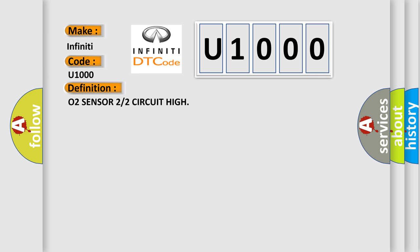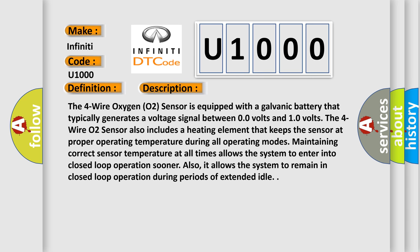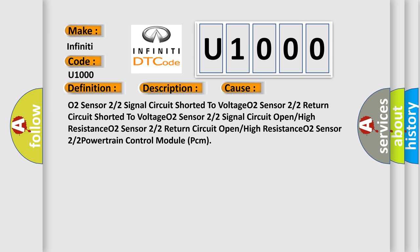Here is a short description of this DTC code. The four-wire oxygen O2 sensor is equipped with a galvanic battery that typically generates a voltage signal between 0 and 10 volts. The four-wire O2 sensor also includes a heating element that keeps the sensor at proper operating temperature during all operating modes, allowing the system to enter closed-loop operation sooner and remain in closed-loop during extended idle. This diagnostic error occurs most often in these cases: O2 sensor signal circuit shorted to voltage, return circuit shorted to voltage, signal circuit open or high resistance, return circuit open or high resistance, or a powertrain control module (PCM) fault.